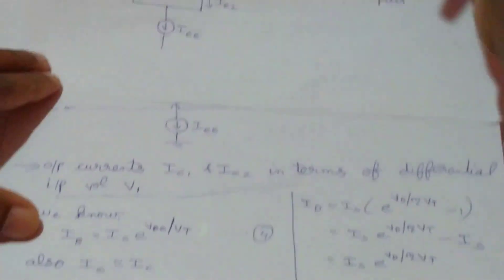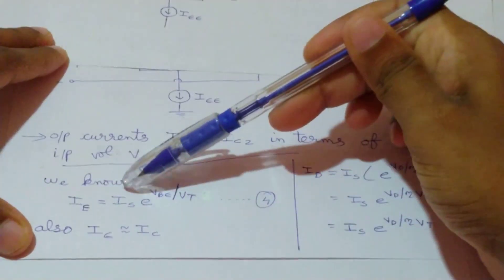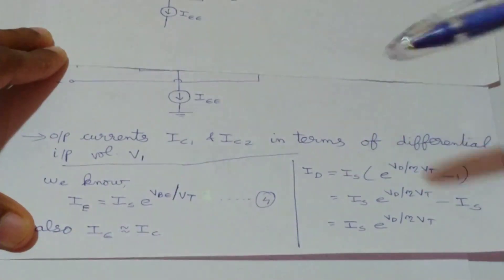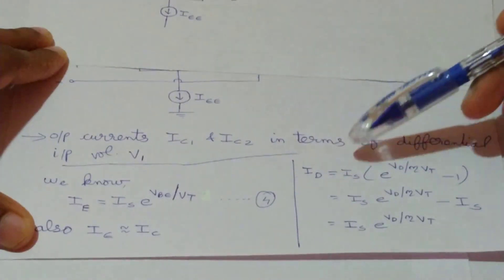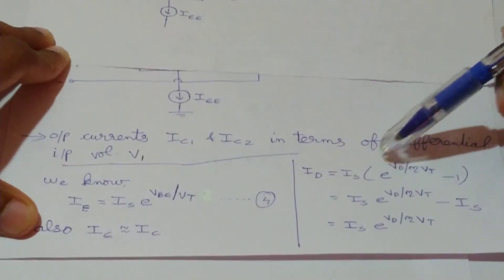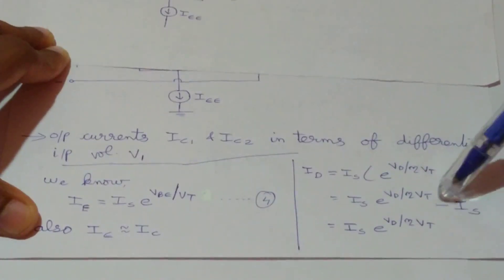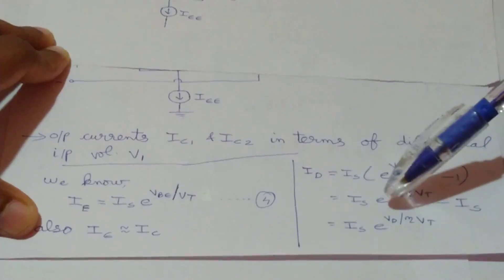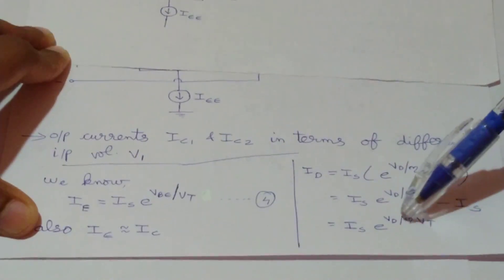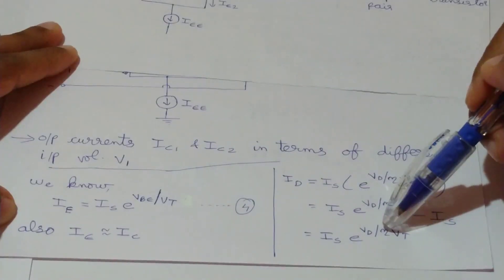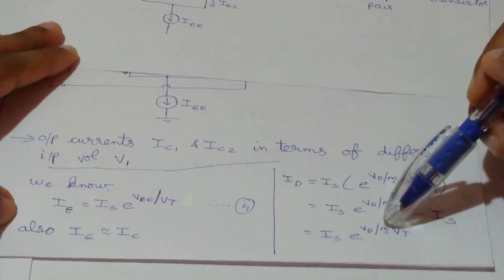We can write the emitter current equation as IE = IS·e^(VBE/VT), derived from the diode current equation ID = IS·e^(VD/η·VT) − 1. Since the saturation current IS is very small, we can neglect it, giving ID = IS·e^(VD/η·VT). Here η equals 1 for germanium and silicon at high current values. Since we are using matched transistors, IS will be the same in all equations.